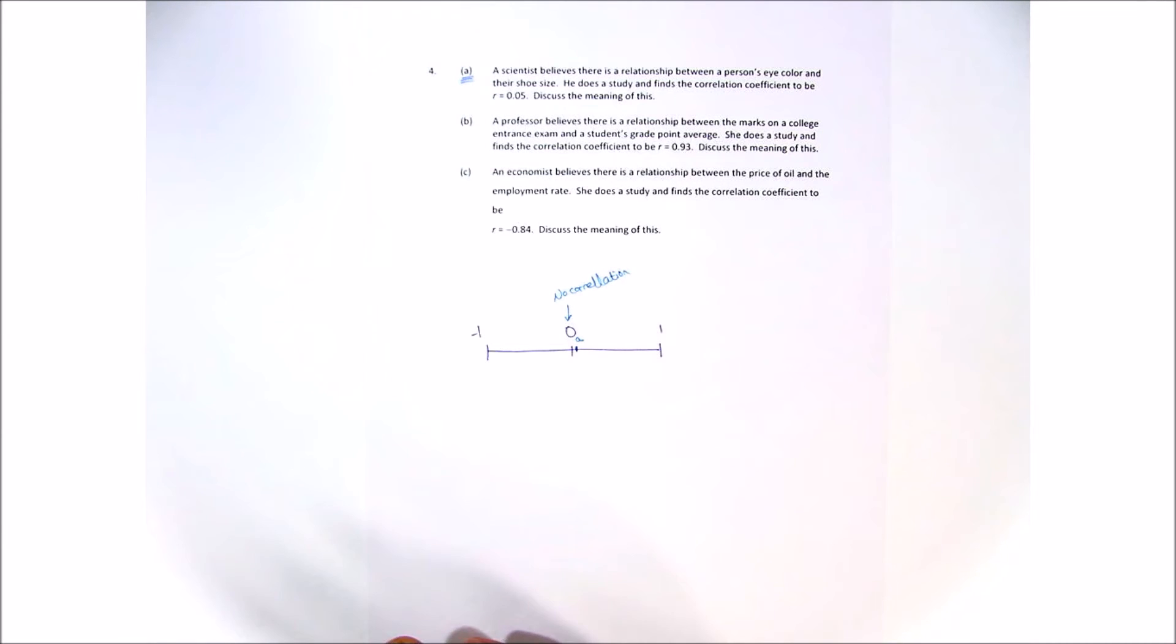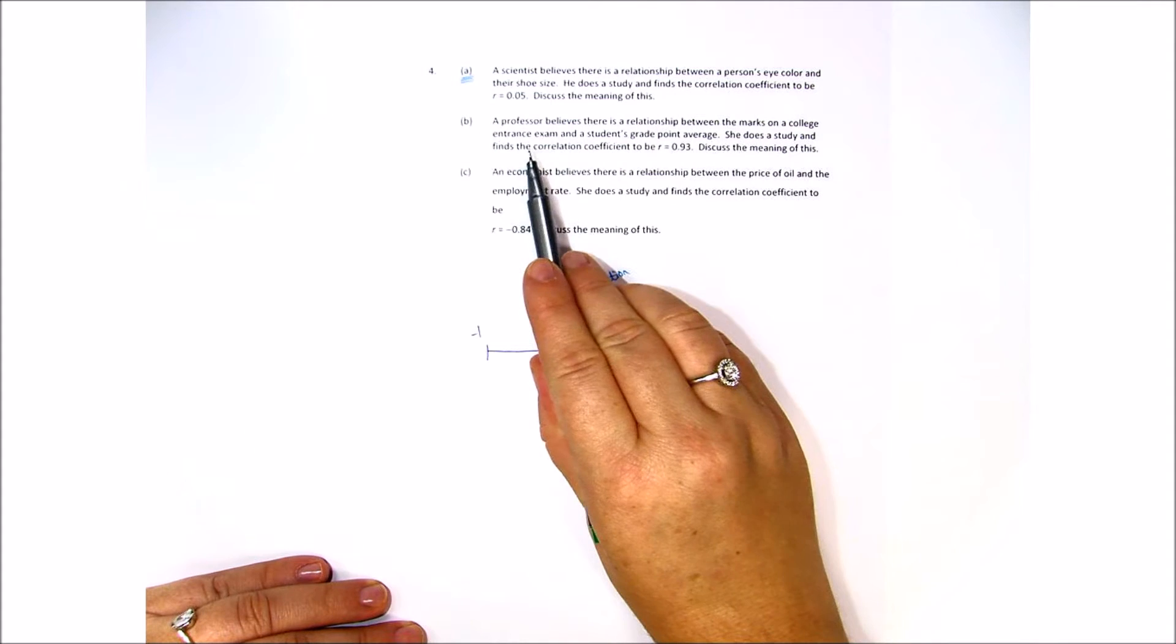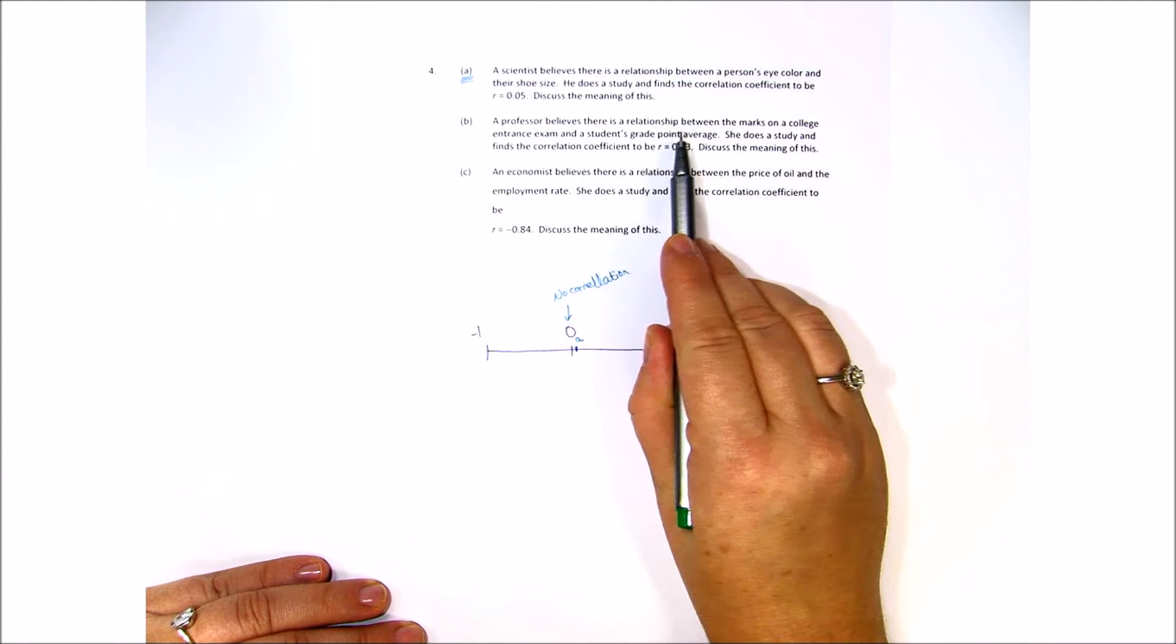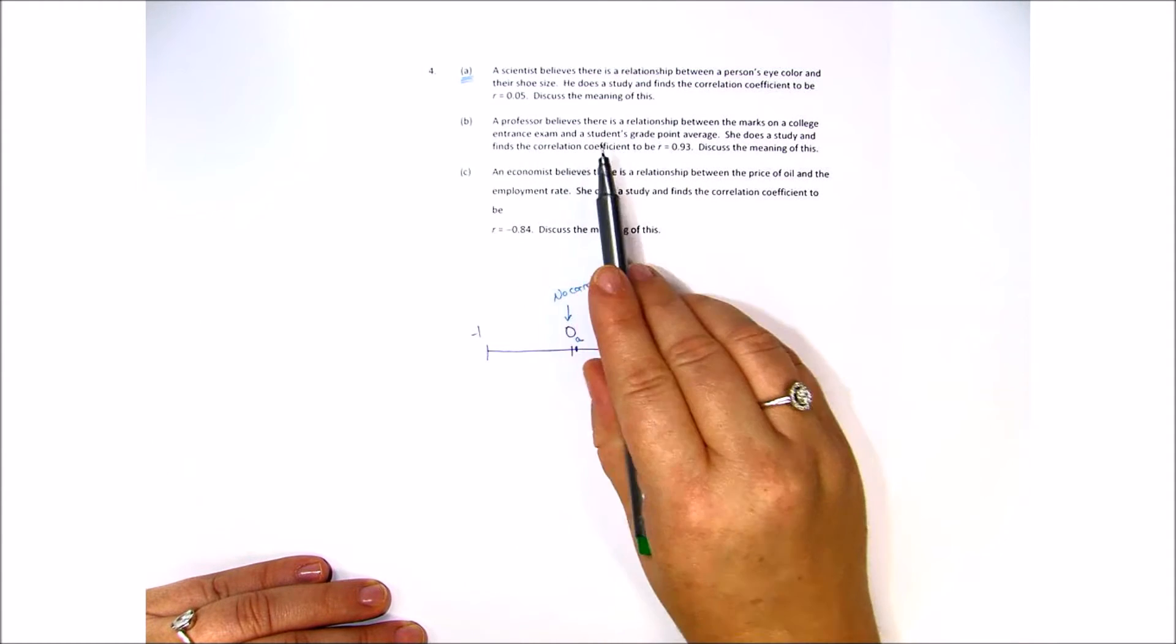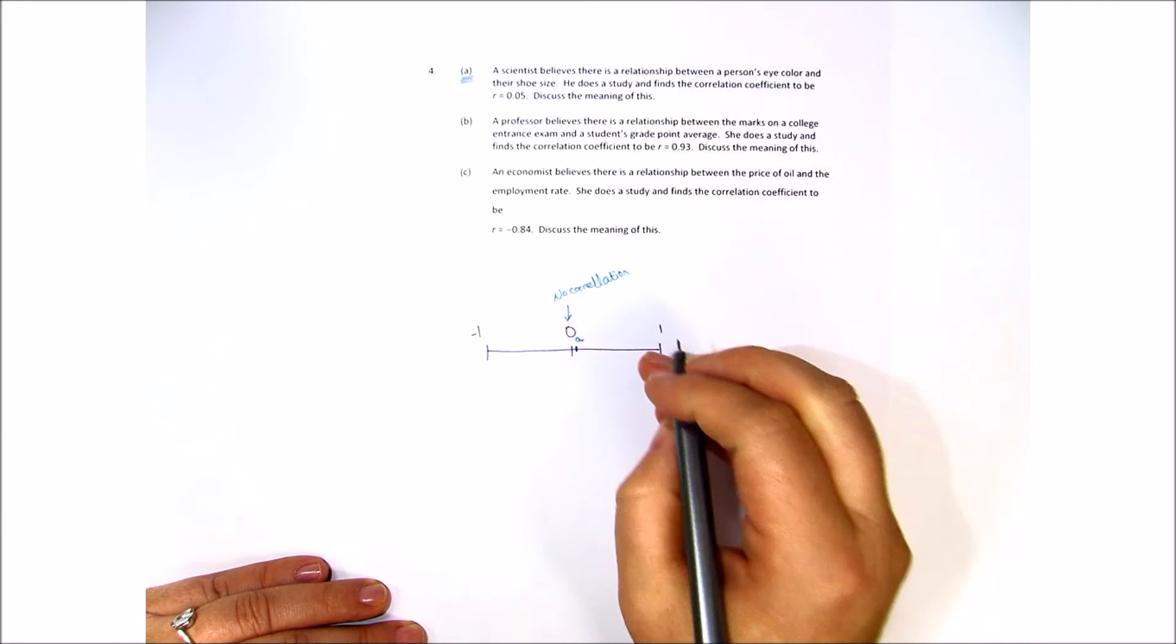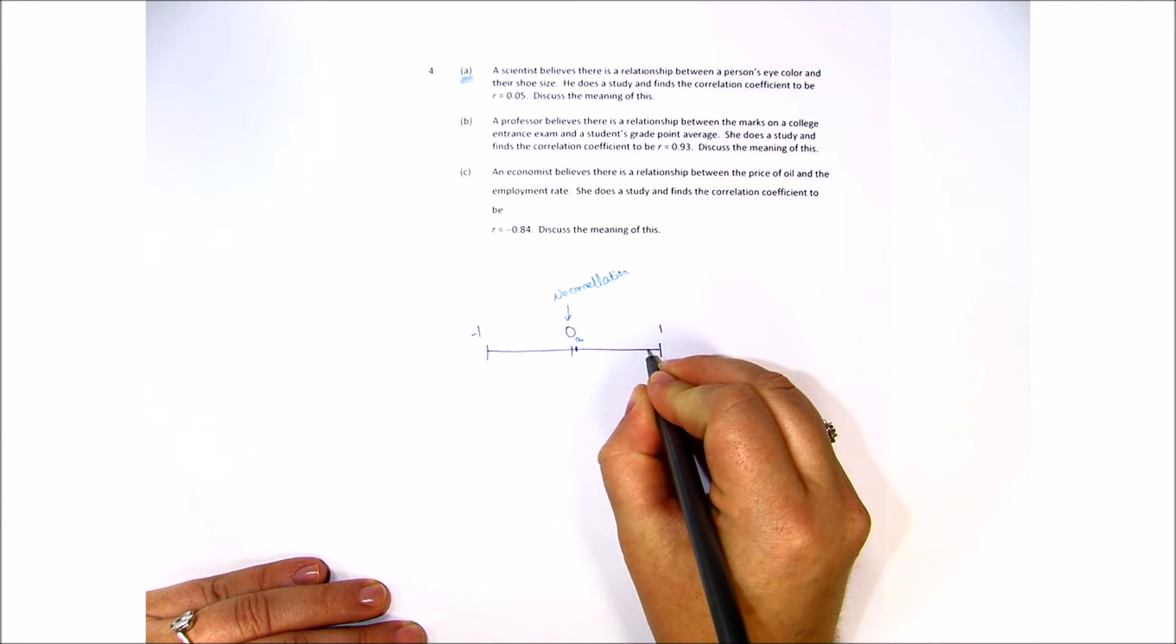So let's look at B. A professor believes there is a relationship between the marks on a college entrance exam and the student's grade point average. She does the study and finds the correlation coefficient to be r equals 0.93.